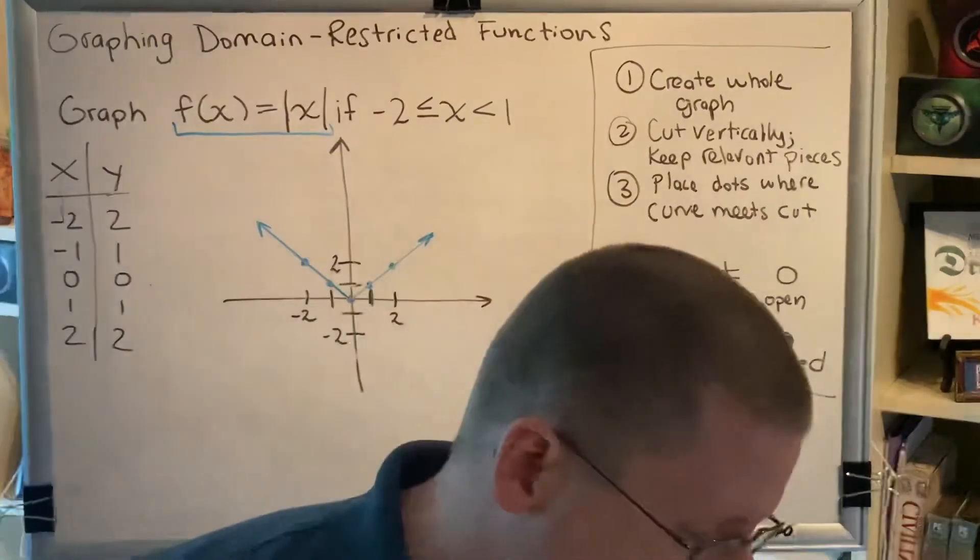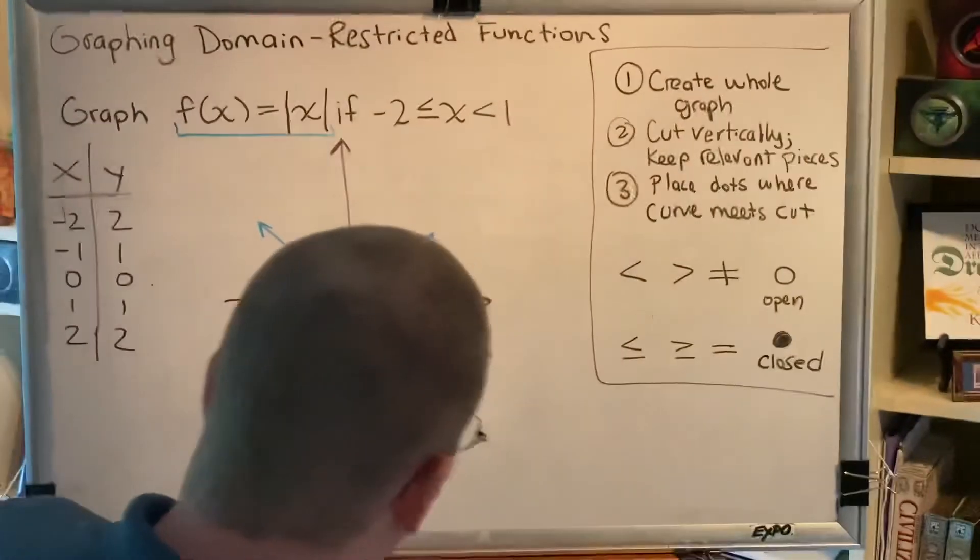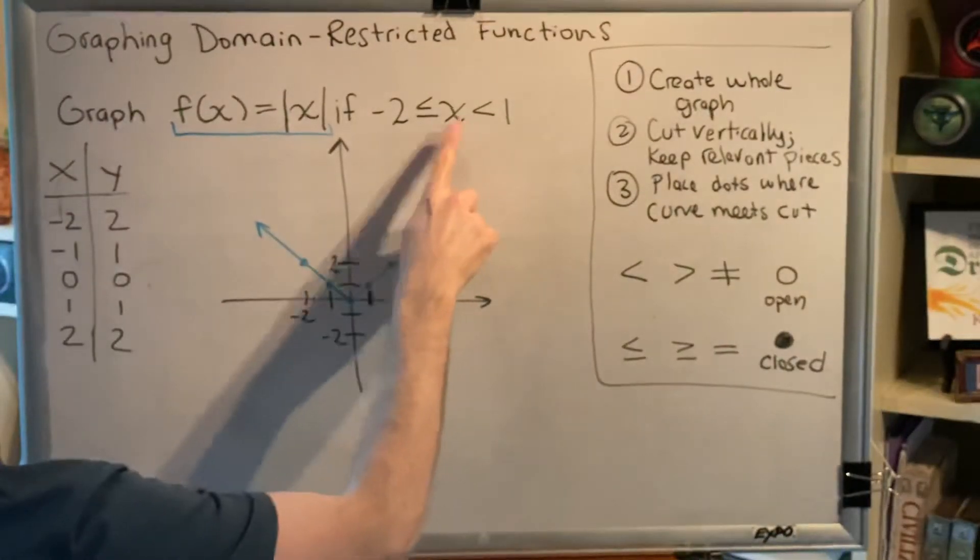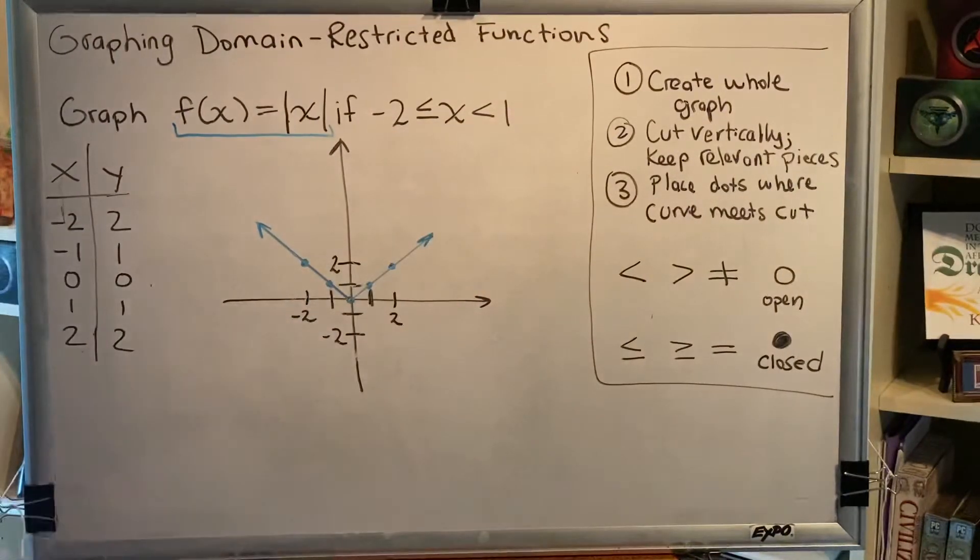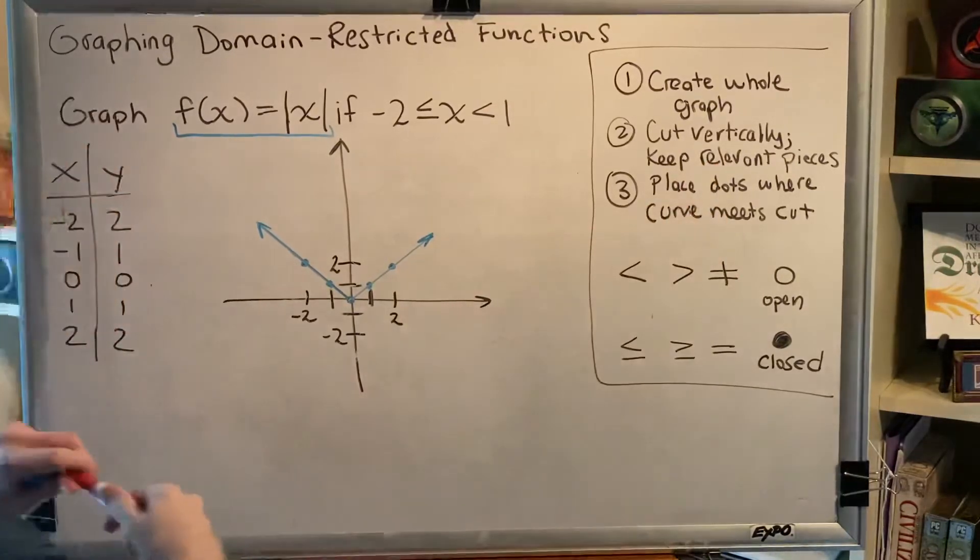But we're not going to keep the whole graph, because this is a domain restricted function. We're only going to keep the part of the graph where x is in between negative 2 and 1. So let's continue through the steps. Step 2. Cut vertically, keep the relevant pieces.